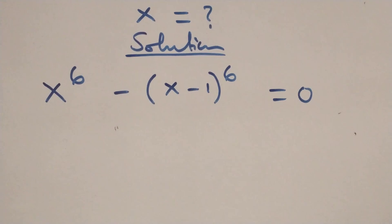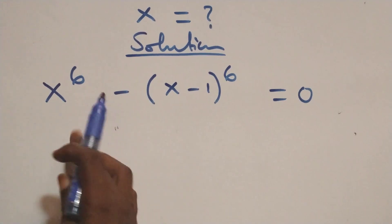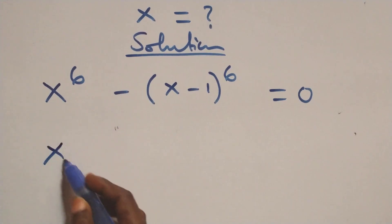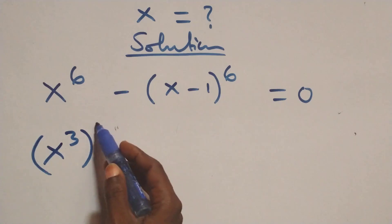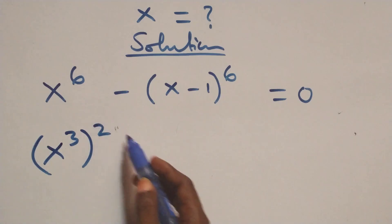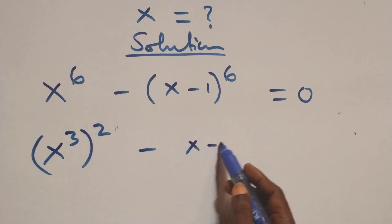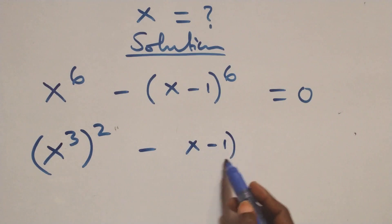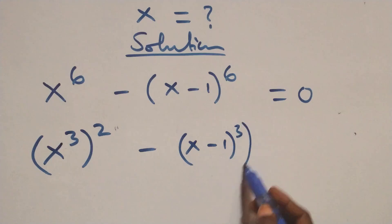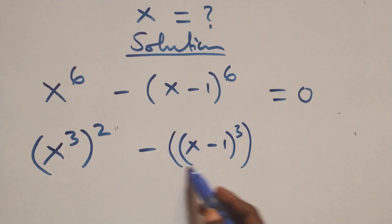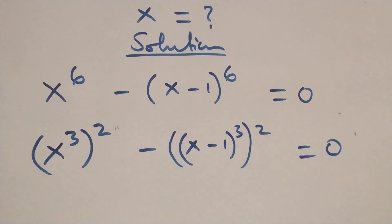We can write this as (x raised to power 3) raised to power 2, minus (x minus 1 raised to power 3) raised to power 2, equals to 0.